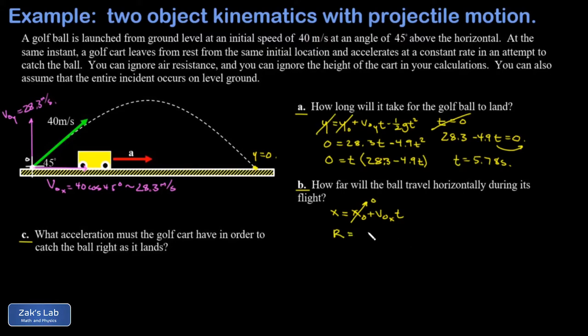So my final position, which we could also call R for the range, is going to be my x velocity of 28.3 meters per second multiplied by how long it flies which is 5.78 seconds. Into three sig figs I've got 164 meters.